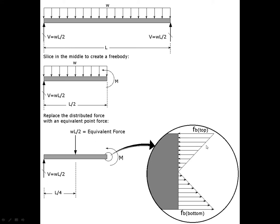There's a net force associated with this triangular stress distribution which is centered two-thirds of the way up from the neutral axis toward the top. So we can treat this stress distribution as an equivalent point force from an equilibrium standpoint, located there, and likewise there's an equivalent tension force below representing the equilibrium equivalent of the distributed tensile stress. Point forces are not reality — a point force on zero surface would produce infinite stress — but for equilibrium analysis we can replace a distributed stress with an equivalent point force.